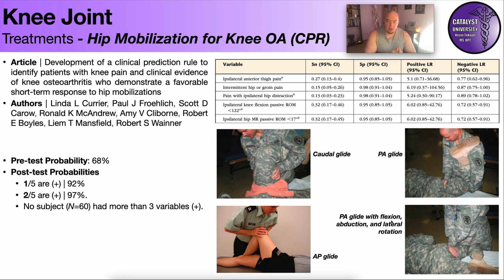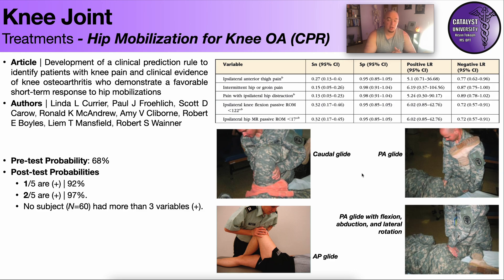Interestingly, they did not include lateral hip mobilizations. This is actually the variation I use in the clinic — I find it to be really useful for most people. It's easy to set up; you can do it with a strap or a towel, or do it manually. But just understand that in this study that determined the clinical prediction rule, they did not actually use lateral mobilizations at the hip.